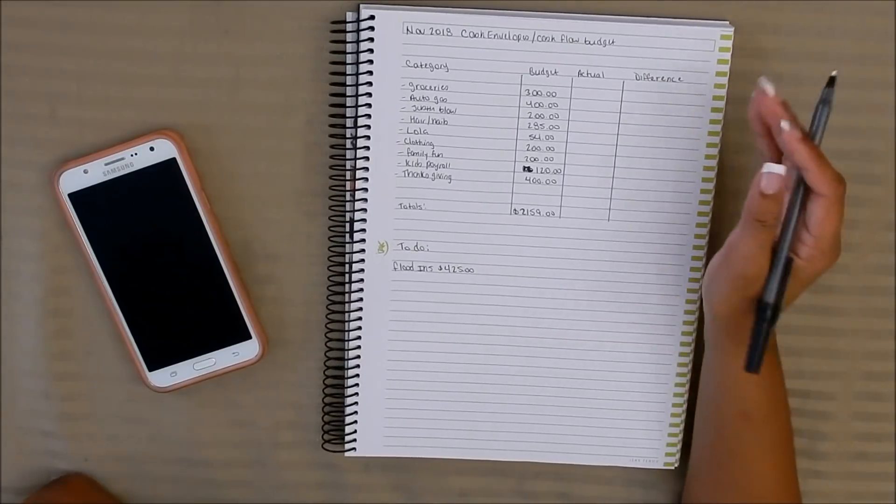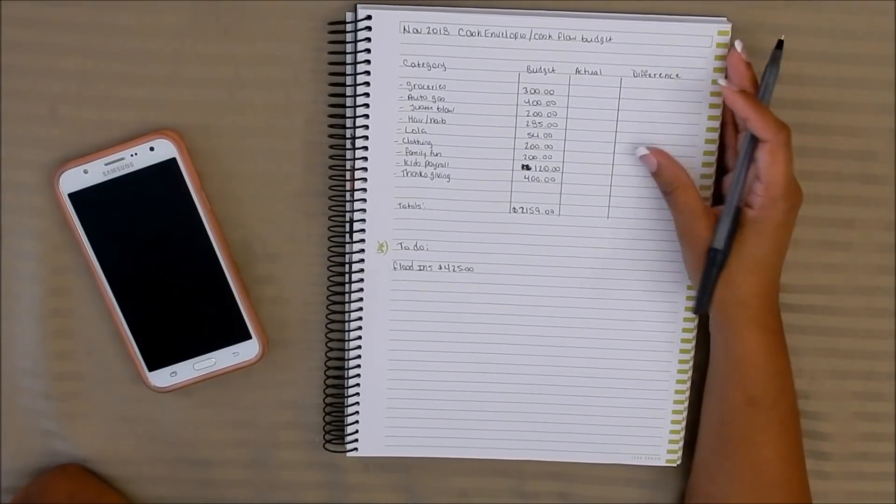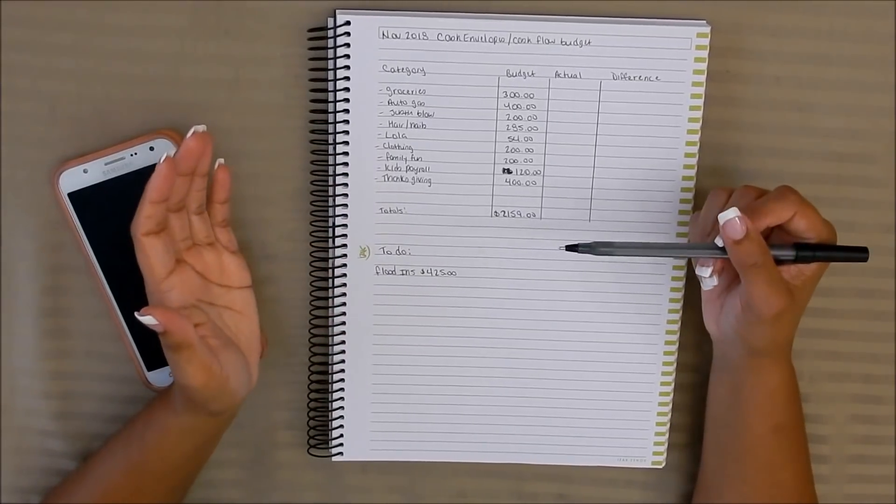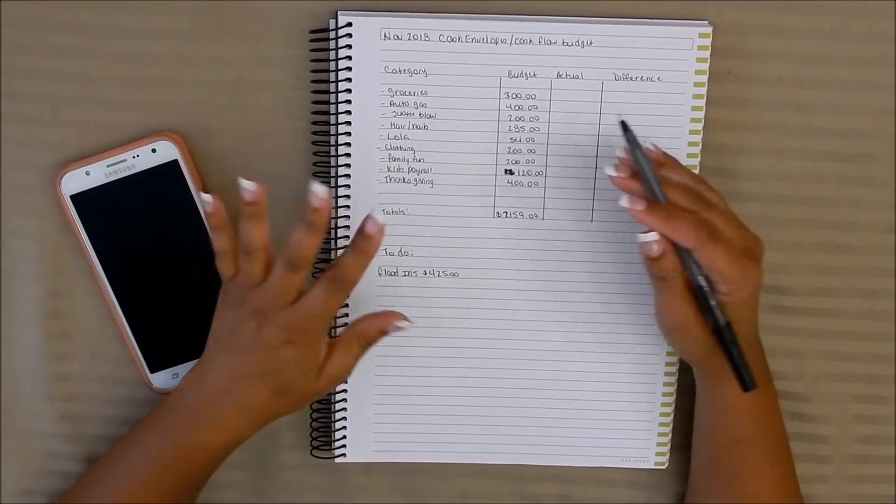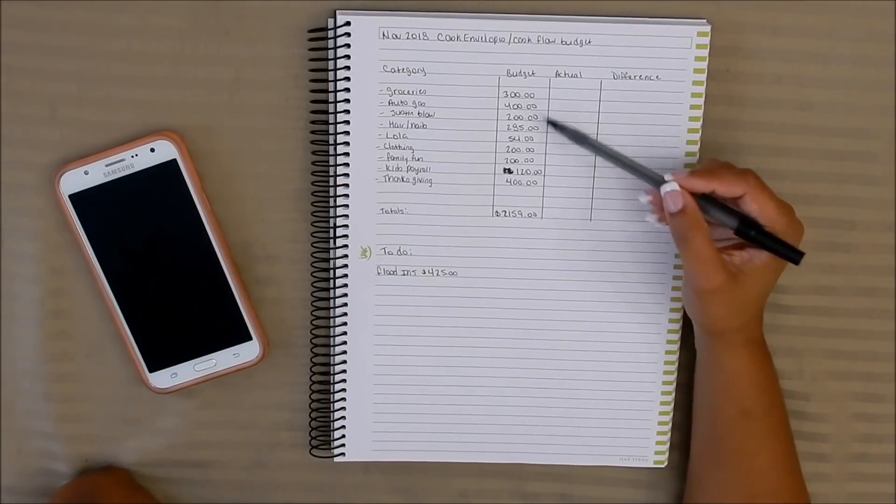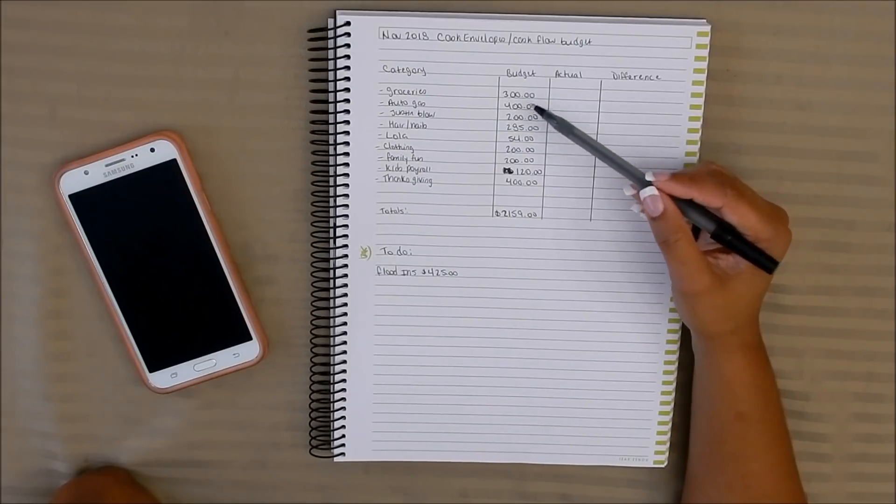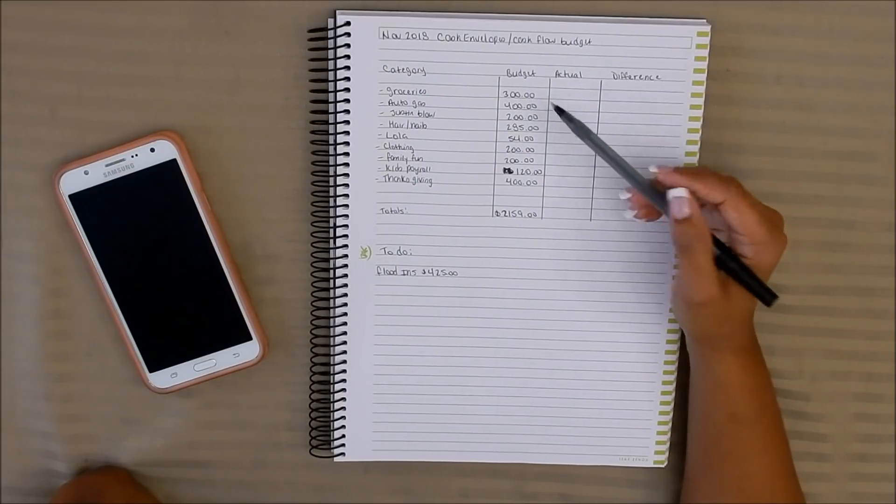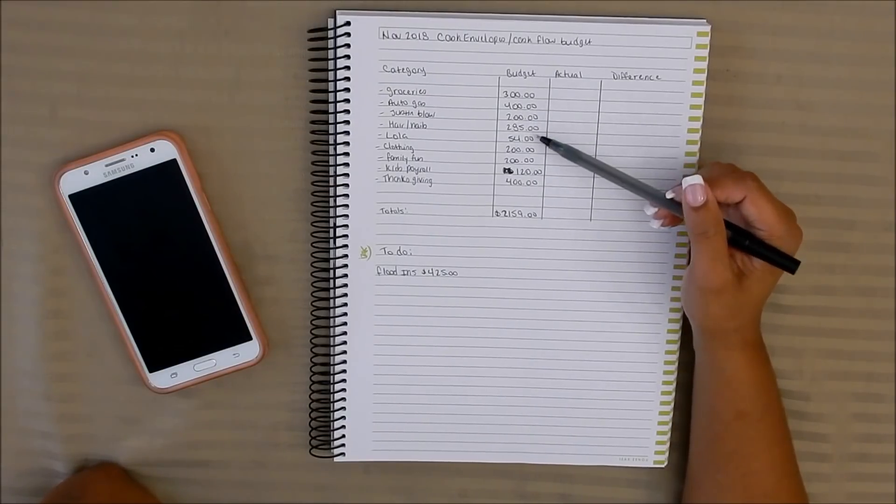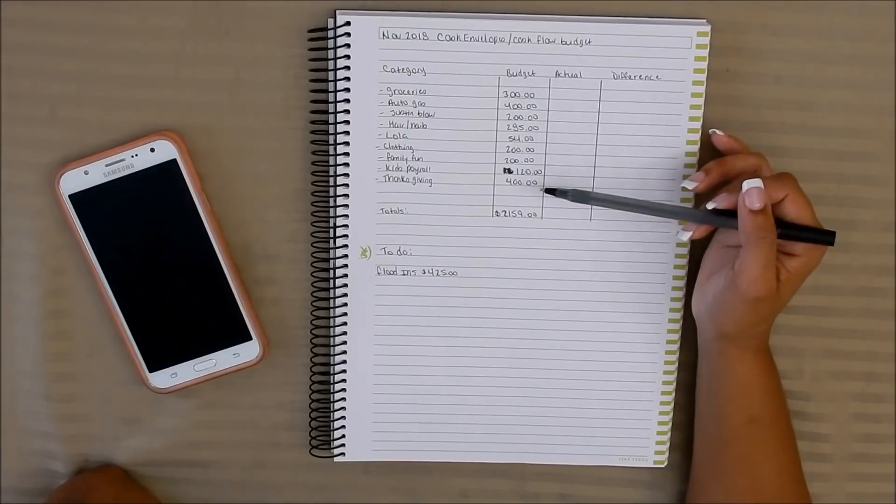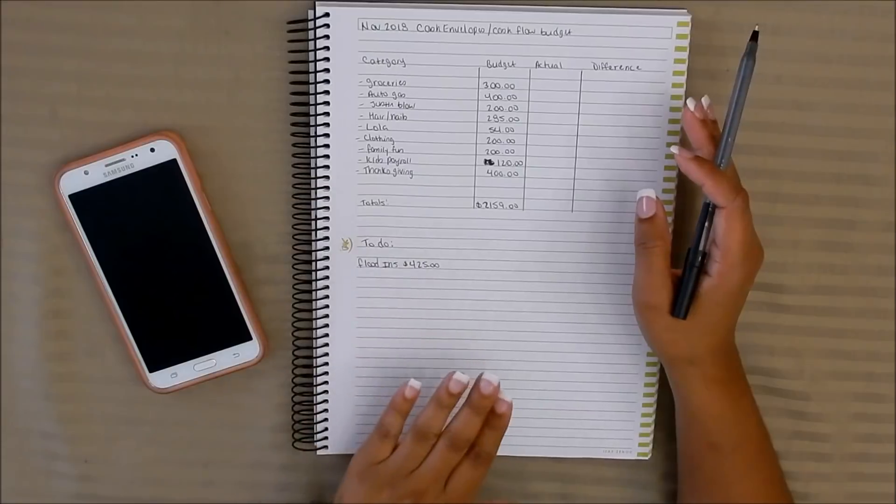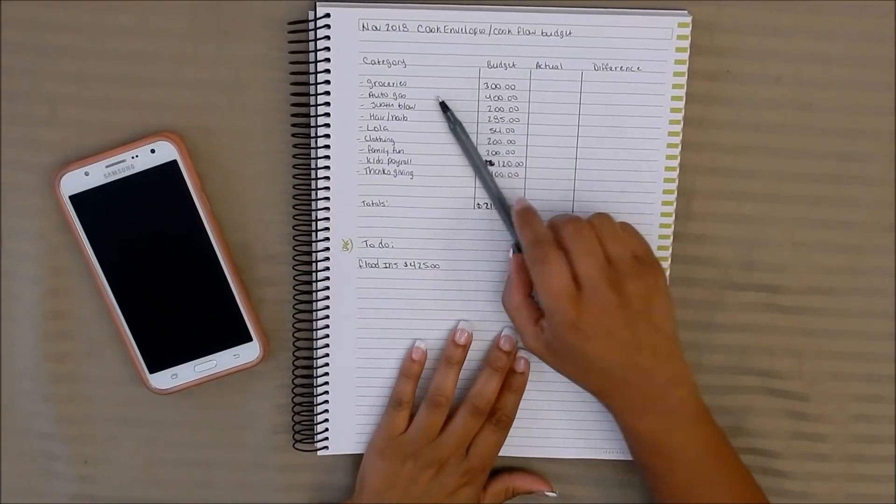So this is our cash flow budget for the month of November. This is just stating the categories that we are going to actually pull cash out per check to cover said budgeted amount. For groceries, I'll probably do $200 for that first paycheck and then the remaining $100 at the end of the month. That way I can go ahead and catch any sales that may be going on for the holidays and stock up on a few things.